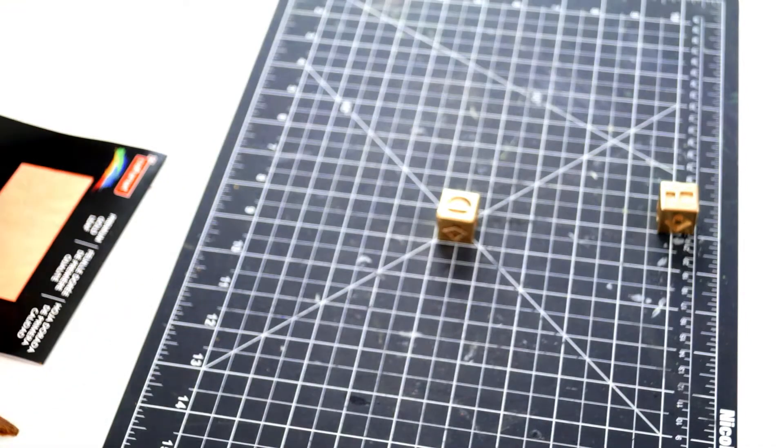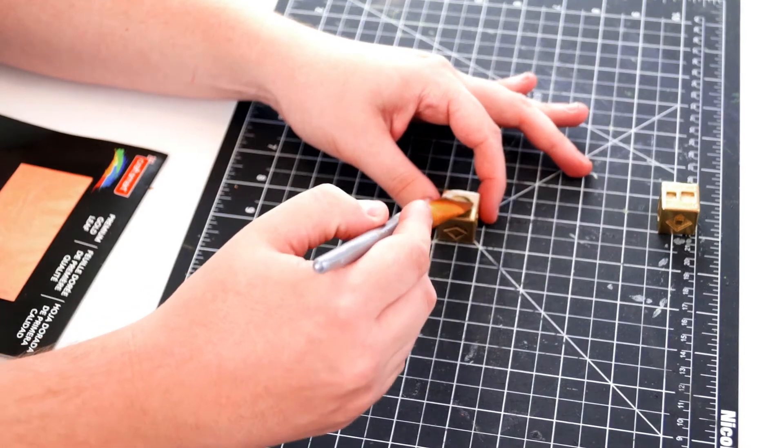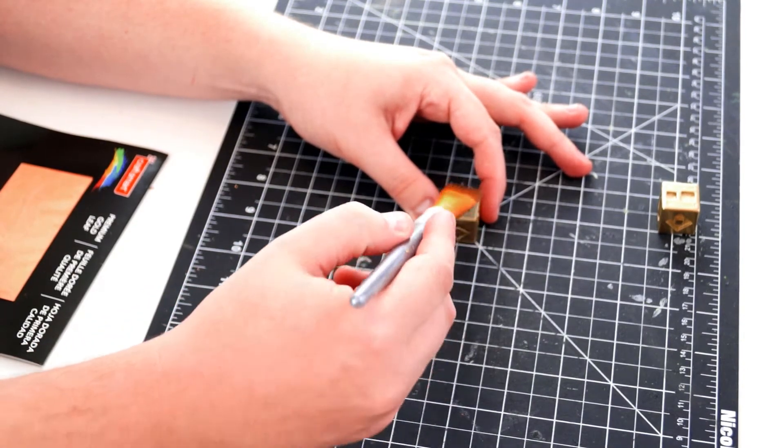Use one brush to brush the sizing onto one of the dice faces. The sizing is opaque when applied, wait for it to become clear before proceeding.